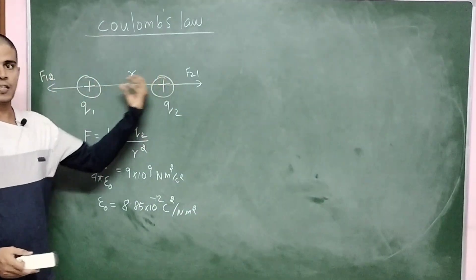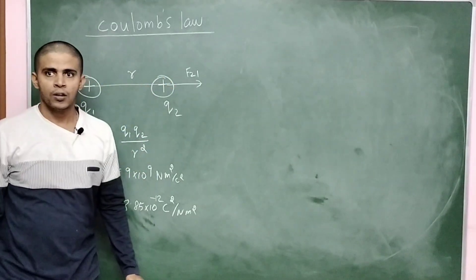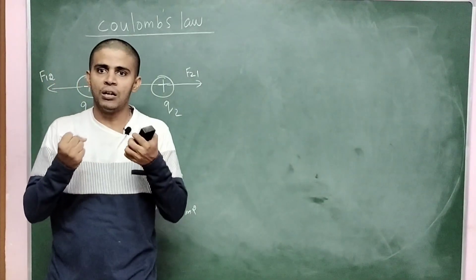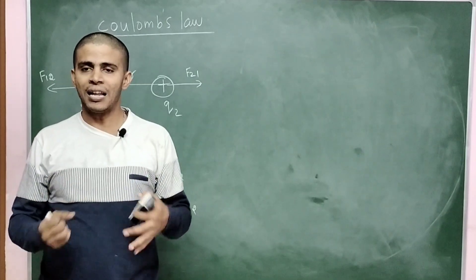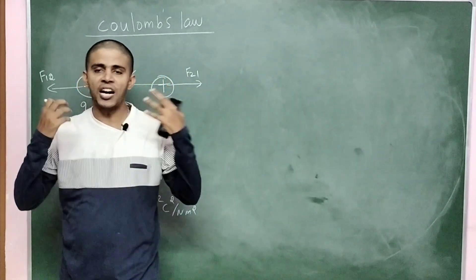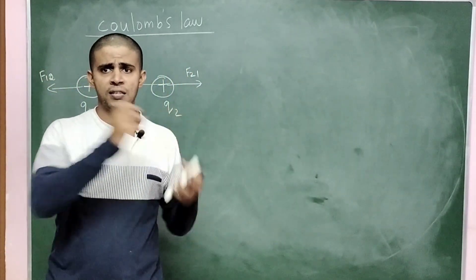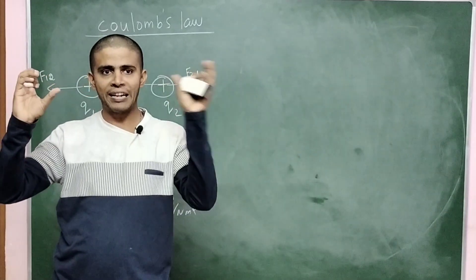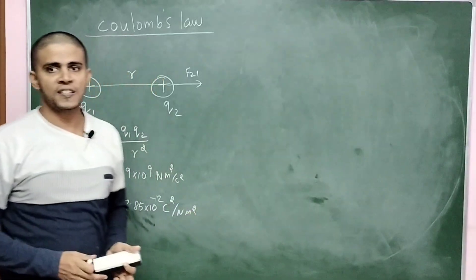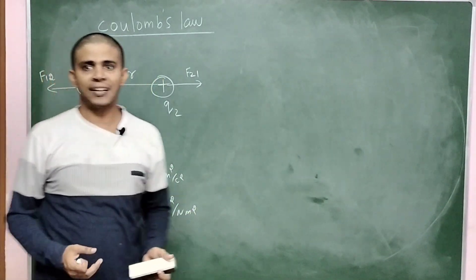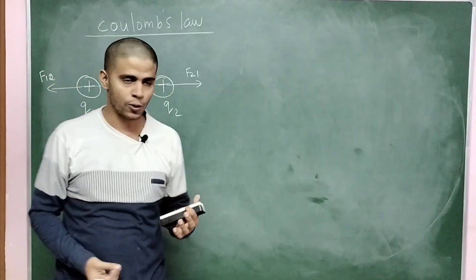Consider two charges Q1 and Q2 separated in space. There are forces between them — those forces are either attractive or repulsive. Like charges repel and unlike charges attract. The nature of that force is captured in Coulomb's mathematical formula.